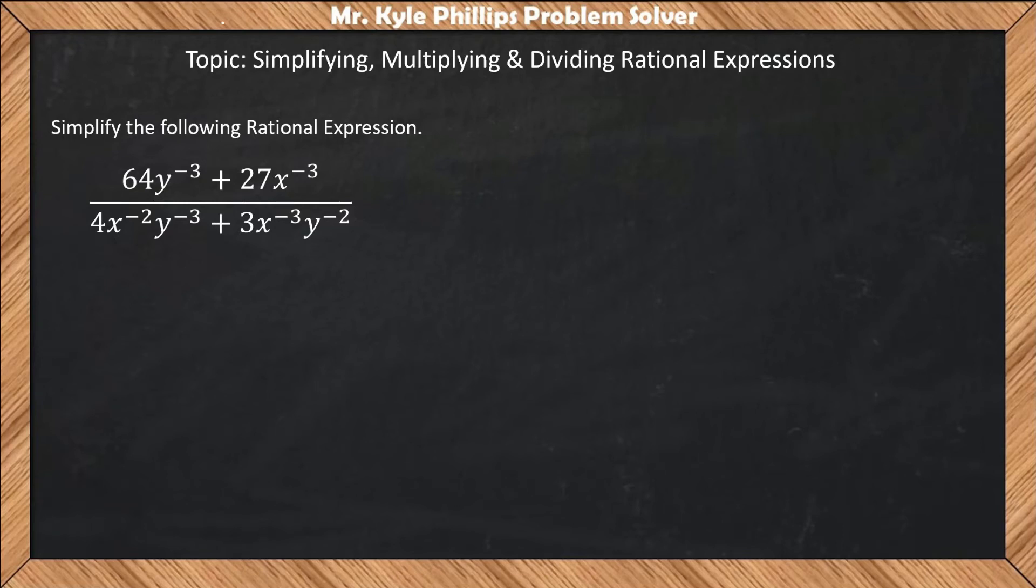Hey everybody. In this video, we're going to be simplifying rational expressions. In the following example, we have 64y^(-3) + 27x^(-3) all over 4x^(-2)y^(-3) + 3x^(-3)y^(-2).